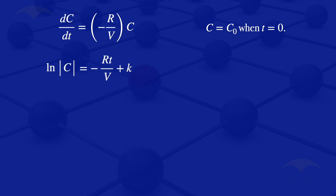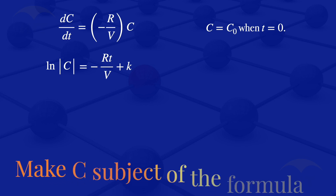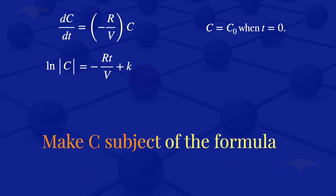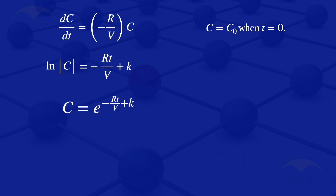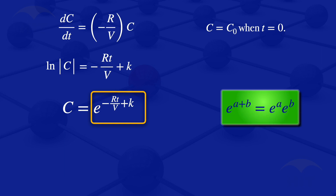Now we want to solve for C in terms of T, so we make C the subject of the formula. We take exponents on both sides, giving C is equal to the exponent of minus RT divided by V plus K. Using laws of exponents — since the exponent of A plus B equals the exponent of A times the exponent of B — our equation becomes: exponent of K times exponent of minus RT divided by V.